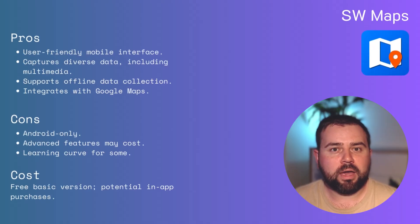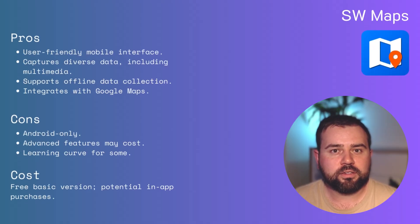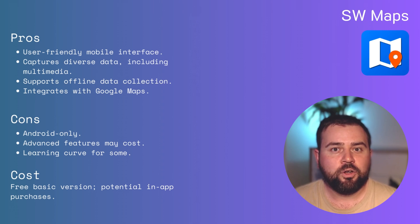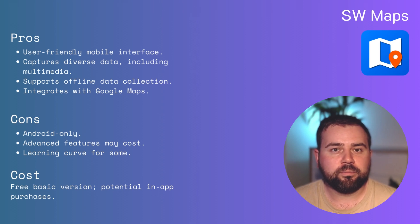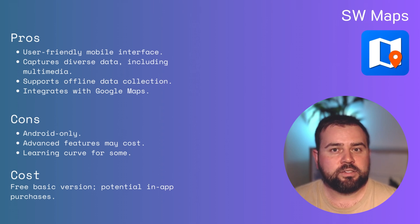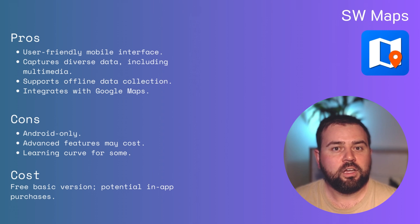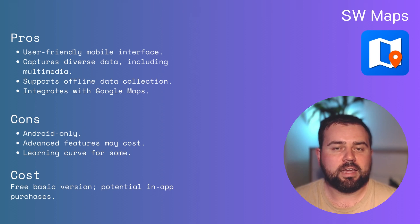The pros of SWMaps include its intuitive user interface, tailored for mobile devices, the ability to capture various forms of data, including multimedia. It supports offline data collection, which is great for remote areas, and its seamless integration with Google Maps for the base map. The cons include it being exclusive to Android, leaving iOS users out. While basic functionalities are free, some advanced features might come at a price. And it requires a small learning curve for non-technical users. SWMaps offers a free version with fundamental features. For advanced functionalities, there might be in-app purchases or premium versions at an additional cost.